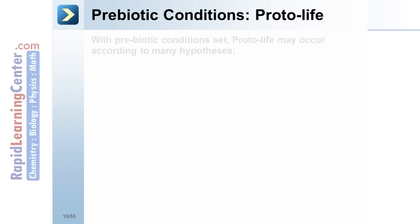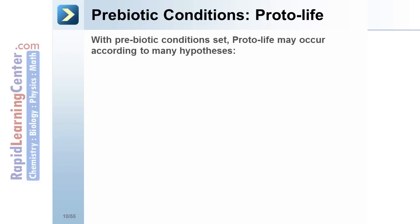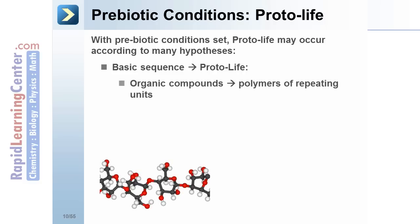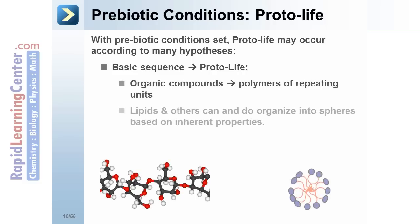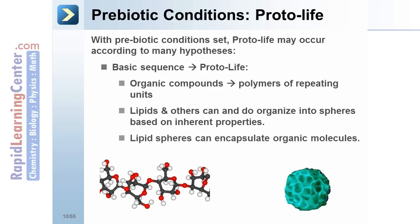Prebiotic conditions and protolife: with prebiotic conditions set, proto-life may occur. According to many hypotheses, the basic sequence is: organic compounds leading to polymers of repeating units. Lipids and others can and do organize into spheres based on inherent properties. Lipid spheres can encapsulate organic molecules — it is believed these conditions may have led to the formation of the cell.